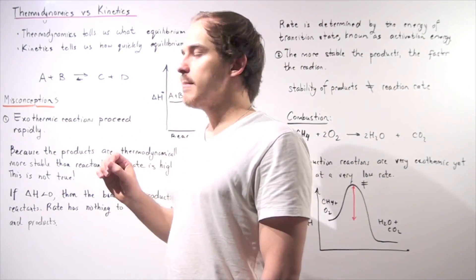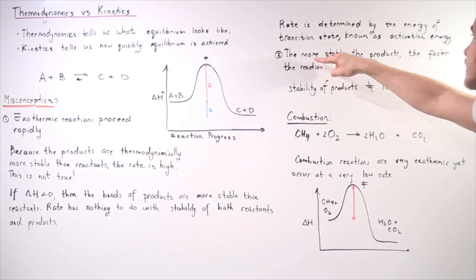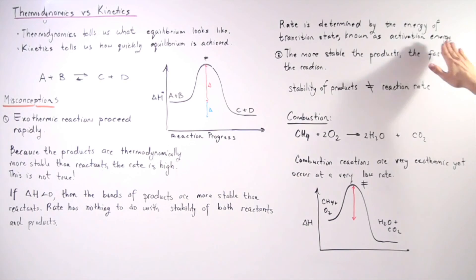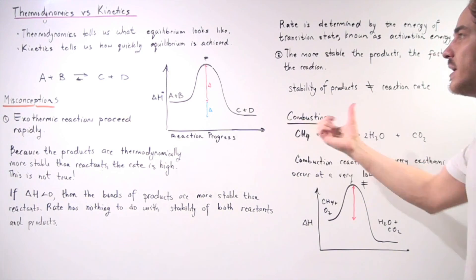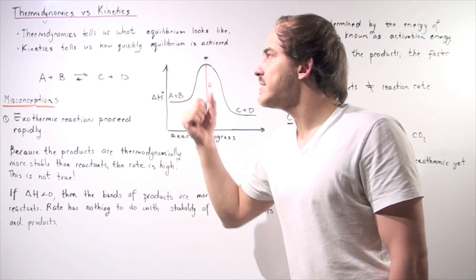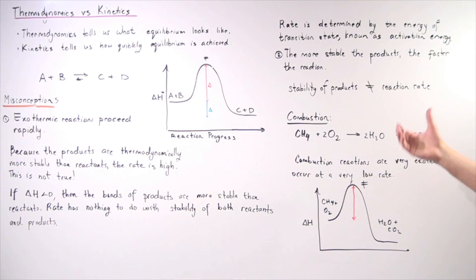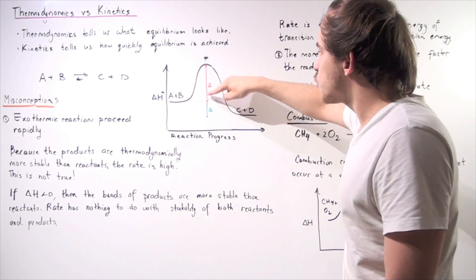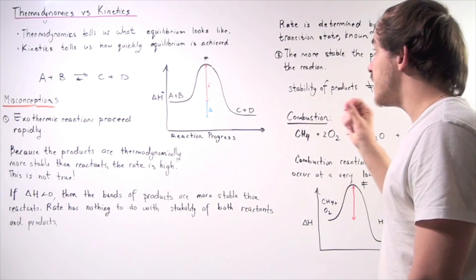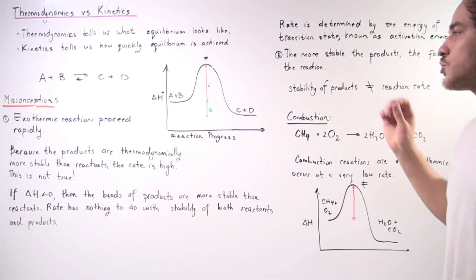The second misconception is very similar: the more stable the products, the faster our reaction is taking place. Once again, we're equating thermodynamics and kinetics. Stability of products does not equal reaction rate. It does not matter how stable our products are — if the transition state energy is very high, our reaction rate will be very low. So this statement is not true.